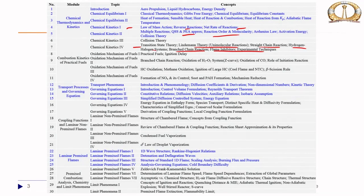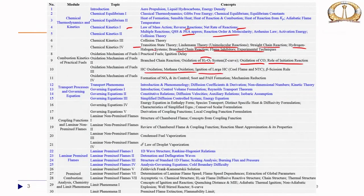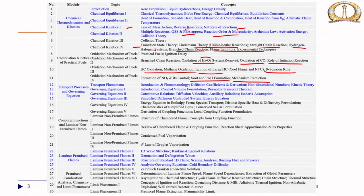We looked into molecular reactions, straight chain reactions, hydrogen-halogen systems, and branching reactions — showing under what conditions a system can lead to very rapid combustion when branching reactions dominate and produce more and more chain carriers. We also looked into flame inhibitors and experimental techniques to measure reaction rate constants. Then we looked into oxidation mechanisms of practical fuels, defined ignition delay, the hydrogen-oxygen Z-curve, oxidation of carbon monoxide, methane oxidation, ignition of light hydrocarbons, cool flames, negative temperature coefficients, beta-scission rule, formation of NOx, the Zeldovich mechanism, prompt NOx, soot and PAH formation, and aspects of mechanism reduction.